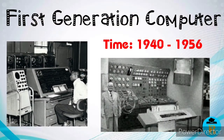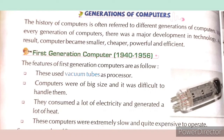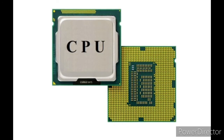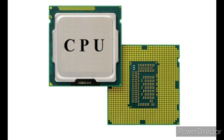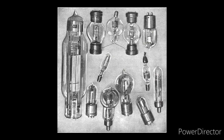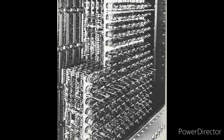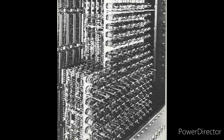First generation computers: the time period was from 1940 to 1956. These used vacuum tubes as processors. The CPU is the central processing unit and is called the processor of the computer. In first generation computers, vacuum tubes were used as processors to process data and execute instructions. In other words, the processor is the brain of the computer, and all calculations are done by the processor.